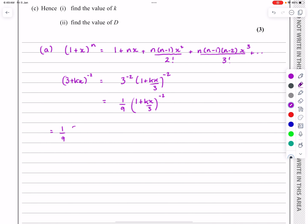I do exactly the same things I just did when I was deriving it in the first place. I'd say it's one plus nx. Then it's going to be minus two times in this case. The thing that I'm adding onto the one is kx over three.